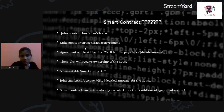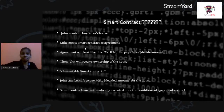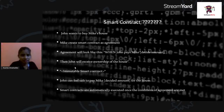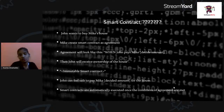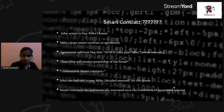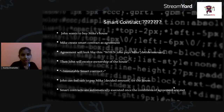Once the smart contract is created between them, no changes can happen. It is based upon a condition: when the specified amount goes to that person's account, ownership of the house transfers to John. John can feel safe to pay the decided amount, and the smart contract automatically executes once the conditions of the agreement are met.